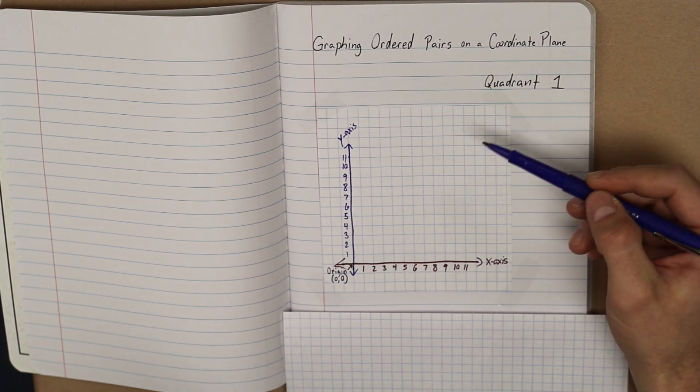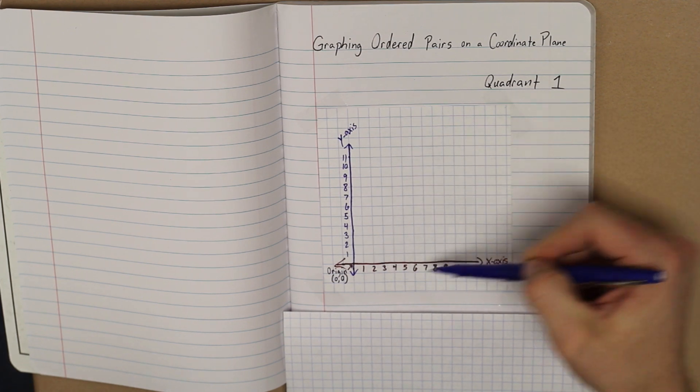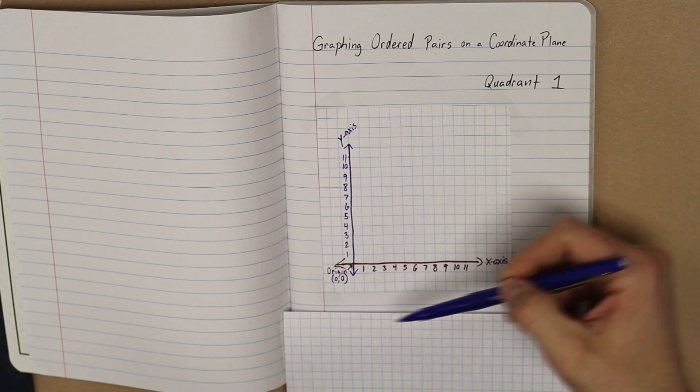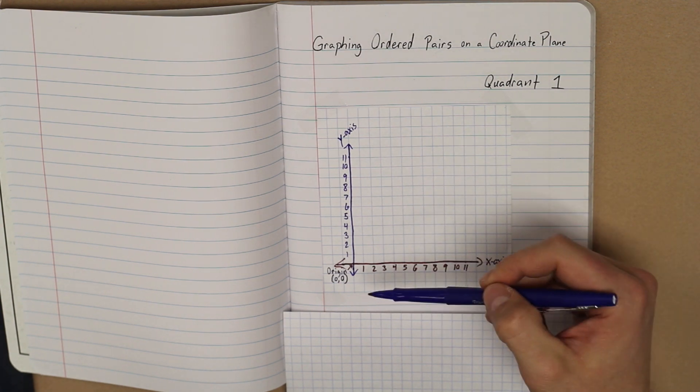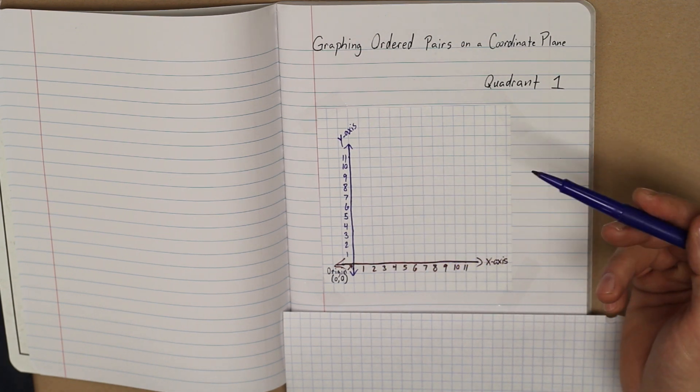We are only focusing on quadrant 1, or this area on the coordinate plane. So we have our x-axis and we have our y-axis and we have our origin where the lines are perpendicular. And now we have it labeled, both x and y-axis.